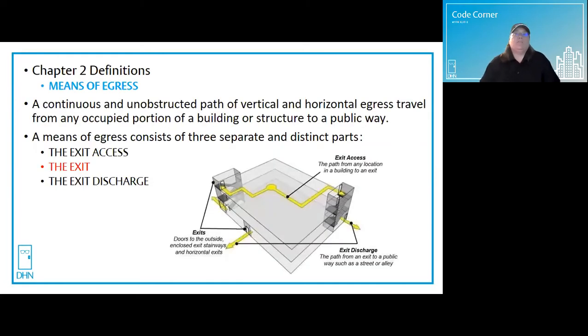I will be basing my answer using references from IBC 2015. Other editions are similar. Always consult your state and local code as well. In Chapter 2, the definition of means of egress is a continuous and unobstructed path of both vertical and horizontal egress travel from any occupied portion of a building or structure to a public way. A means of egress consists of three separate and distinct parts.